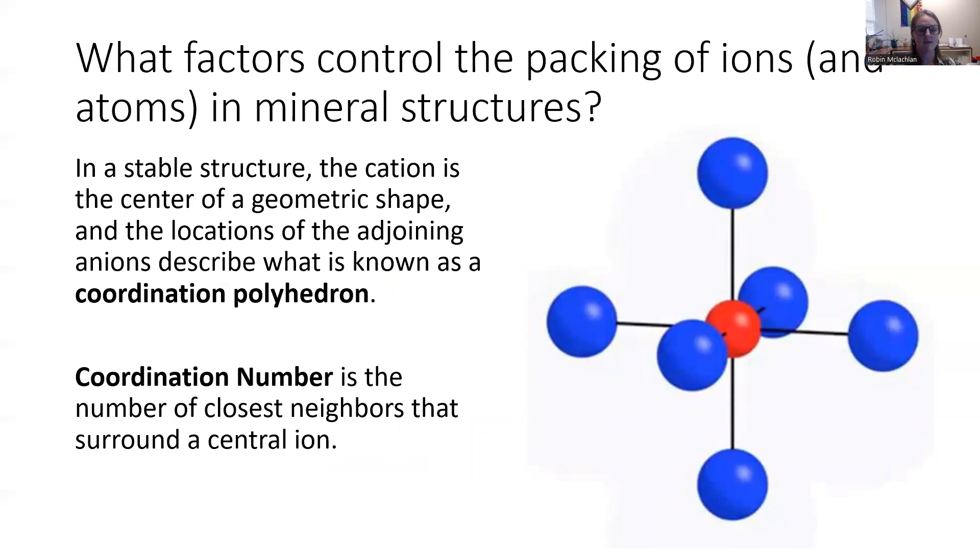And now we have to take another step back and think about the overall structure. Not only how far apart are these atoms bonded, but what's the shape that they create? Remember, there is typically a cation in the middle surrounded by anions on the outside, and the shape that they make is called the coordination polyhedron.